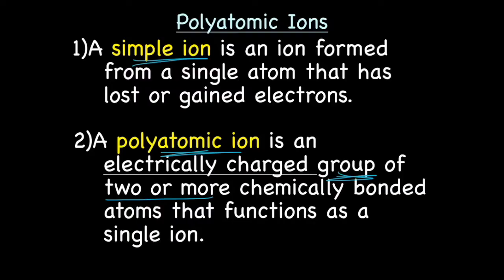Polyatomic ions don't look exactly like a simple ion because there's two or more atoms put together. But as a group, they have a positive, like a one plus, a one minus, two plus, two minus, and they act just like the simple ion that we've been talking about all along.